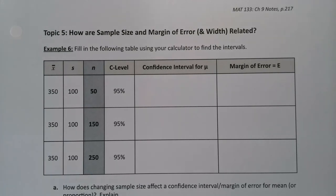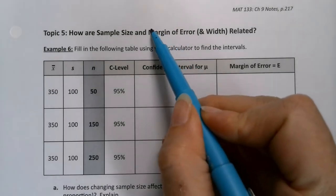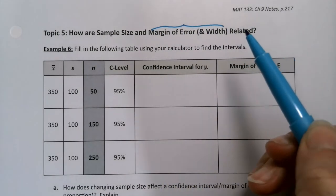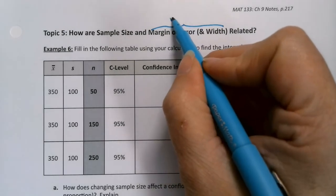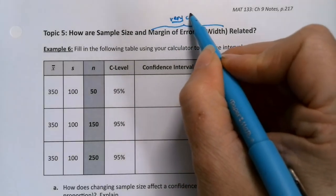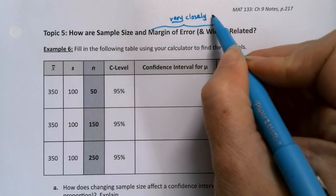Now for this topic we want to see how sample size and the margin of error and width are related. I put 'and width' in there because of course the margin of error and the width are very much the same thing. It's just the width is twice the margin of error. So they're very closely related. When you know about one you know about the other.